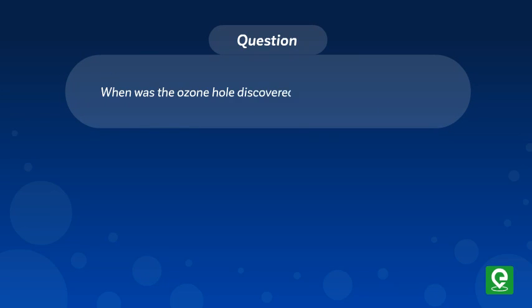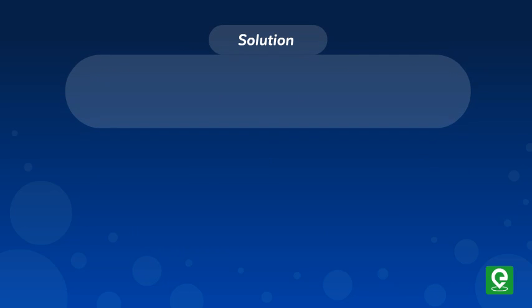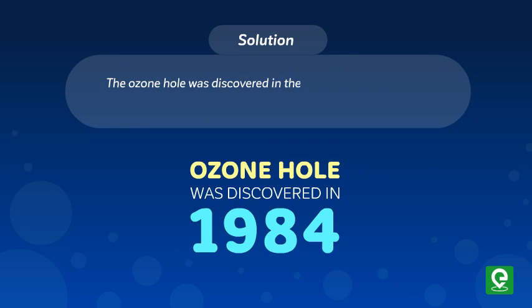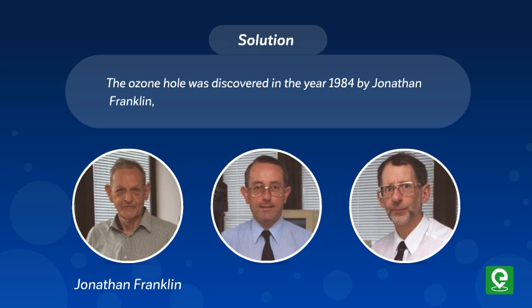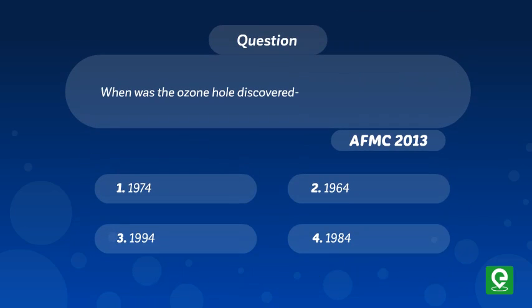Question: When was the ozone hole discovered? 1974, 1964, 1994, 1984? This question was asked in AFMC 2013. Solution: The ozone hole was discovered in the year 1984 by Jonathan Franklin, Joseph Farman, and Brian Gardiner. Hence, option 4 is correct.